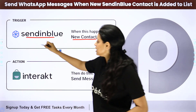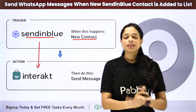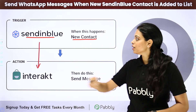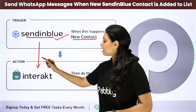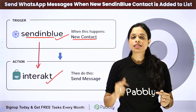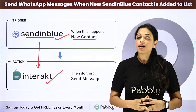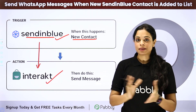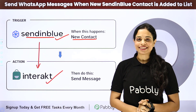How can we do that? For this, we will have to integrate the two applications, and the same thing can be done using Pably Connect software. Your trigger application will be Sendinblue and your action application will be Interact, which helps you in sending WhatsApp messages. To understand how to integrate and automate this entire process, let me take you to my screen.